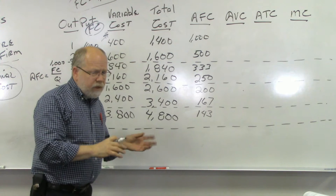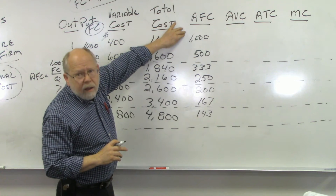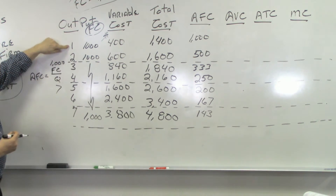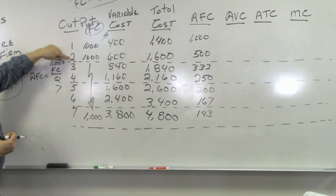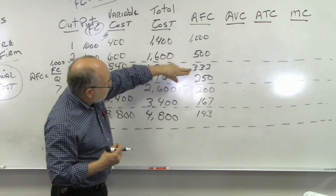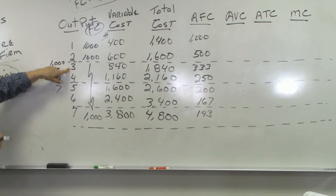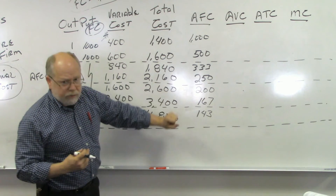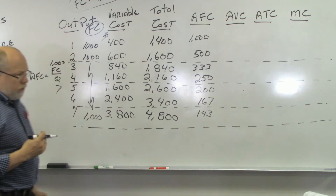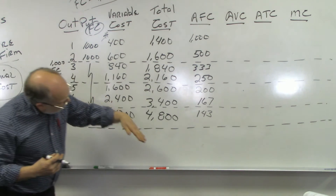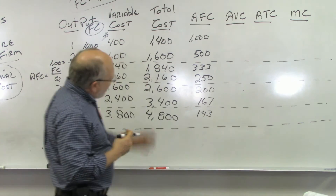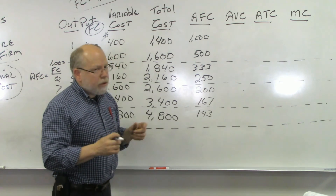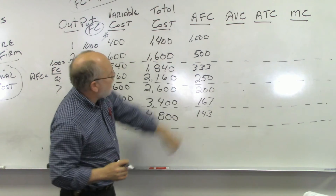When going from 4 to 5 it only drops $50, and here we're only dropping about $20. So you see it drops really, really fast and then just tapers off. The average fixed cost curve does not have a U-shape — it just keeps going down, down, down.